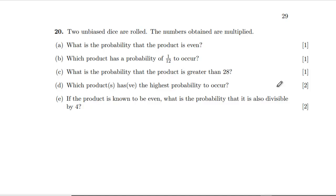Two unbiased dice are rolled and the numbers obtained are multiplied. What's the probability that the product is even? We only need one or both numbers to be even. The only way we can get an odd product is having two odd numbers multiplied together, so the probability is three quarters.